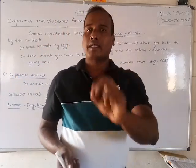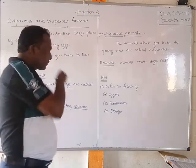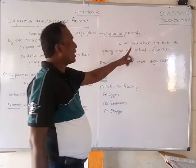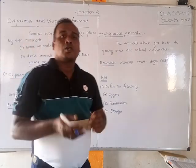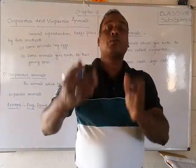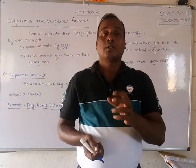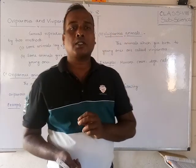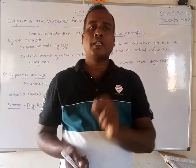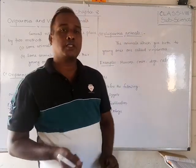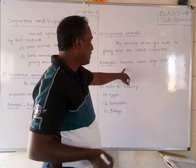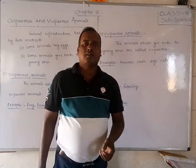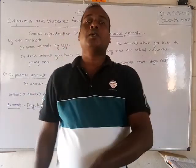Viviparous animals means the animals which give birth to young ones are called viviparous animals. These animals give birth to young ones directly. Especially mammals — humans, cows, dogs, cats, etc. — these animals all give birth to young ones and are called viviparous animals.